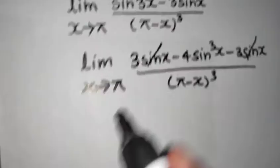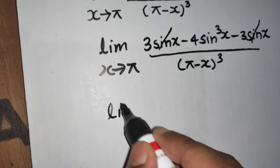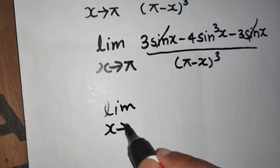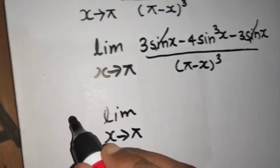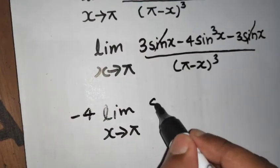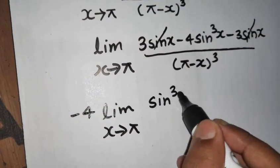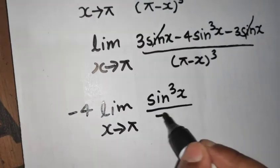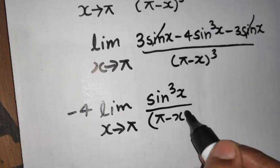This 3 sin x can be cancelled out. So you are getting limit x tending to pi minus 4 I am taking out.